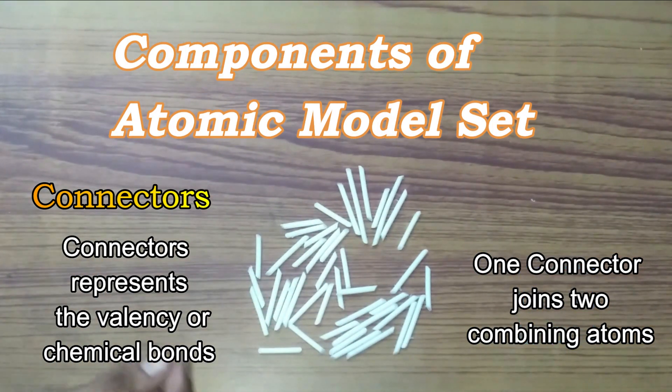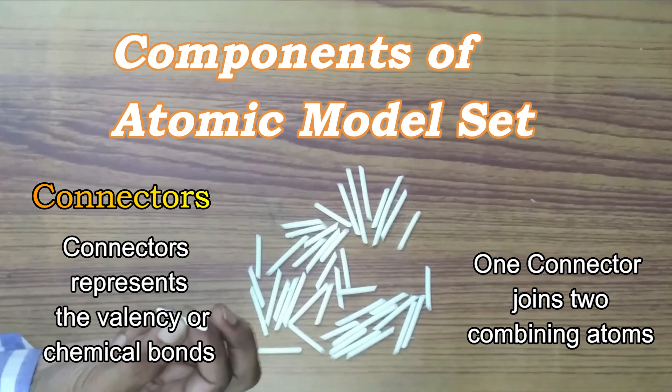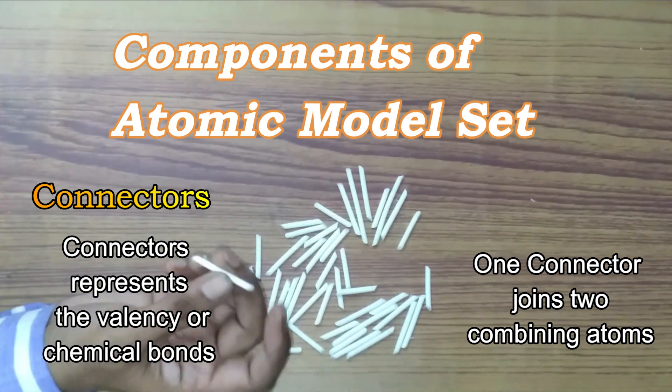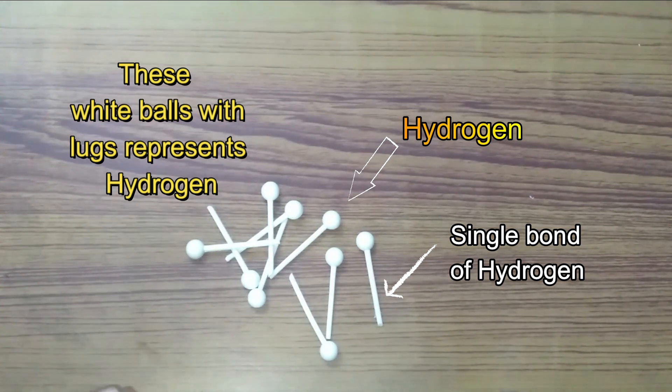These white connectors represent valency bonds where one plastic connector will join with two elements at two corners. These white balls with lugs represent hydrogen.